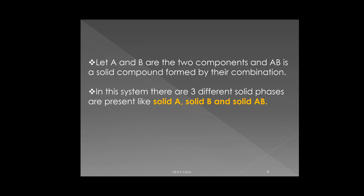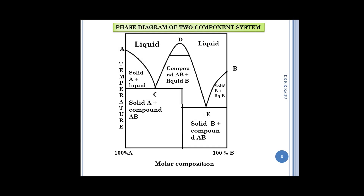Let A and B be two components. From these two components, the compound AB is formed, which is in the solid phase. In this system, three different solid phases are present: solid A, solid B, and solid AB. This is a phase diagram of the two-component system — a generalized phase diagram for compound A in solid state and compound B also in solid state.